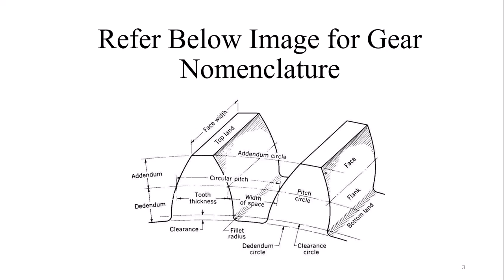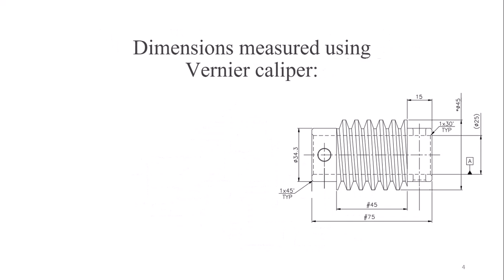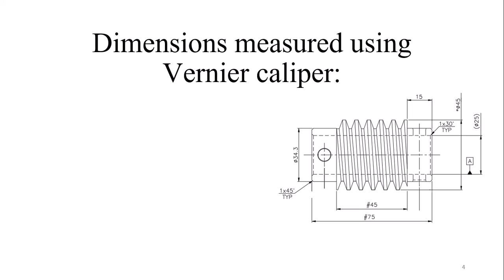First of all, addendum, dedendum, pitch circle diameter, tooth thickness, and face width - these dimensions are required. Dimensions measured using vernier caliper: total length I measured is 75mm, length of threads 45mm.